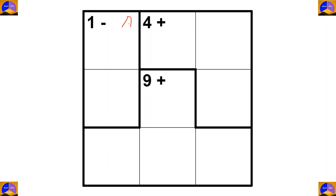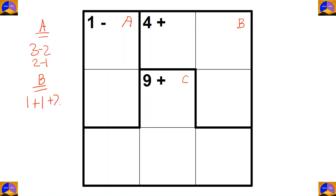Now let's do another puzzle. This will be cage A, this will be cage B, and this will be cage C. For cage A there are two options: three minus two and two minus one. For cage B there is only one option: one plus one plus one plus two. For cage C also there is only one option: three plus one plus two plus three.